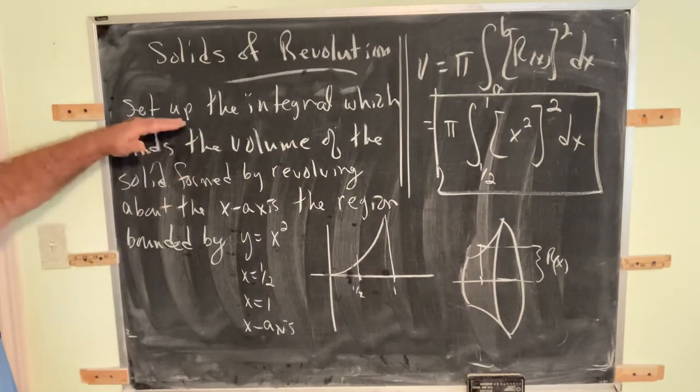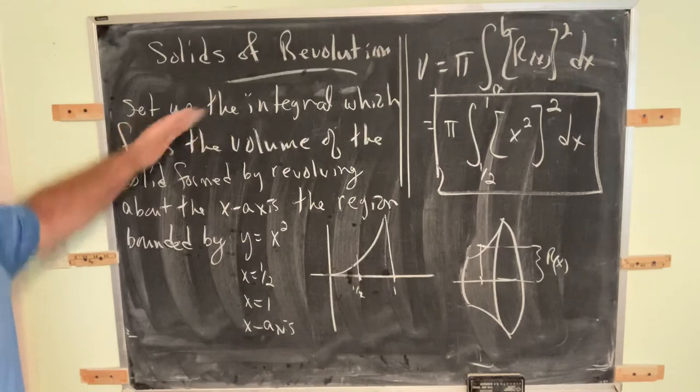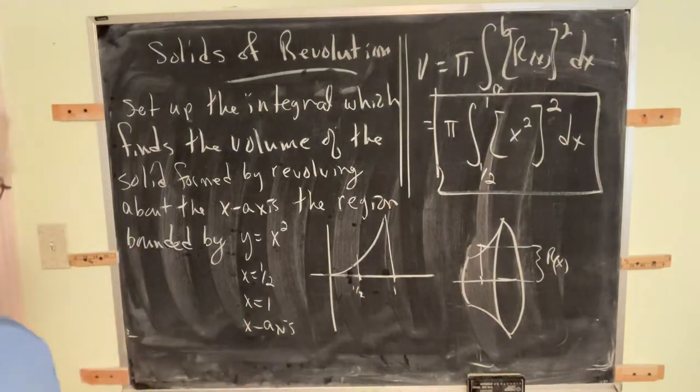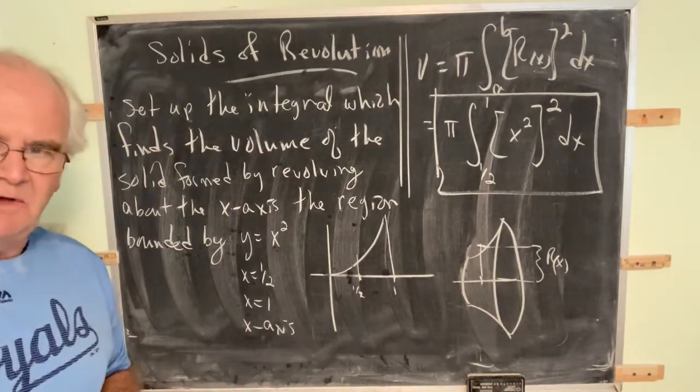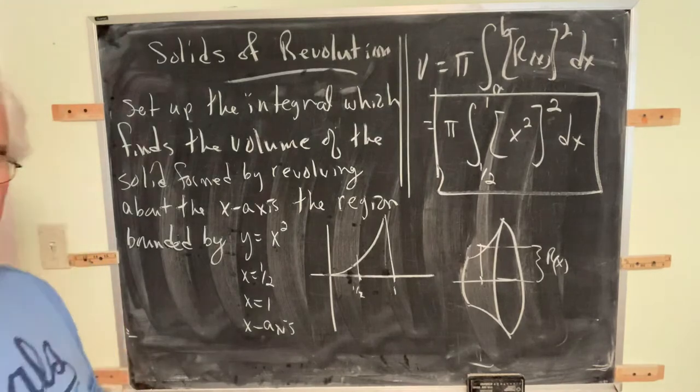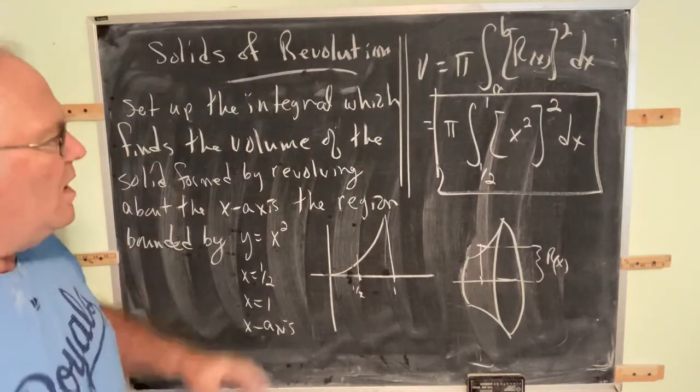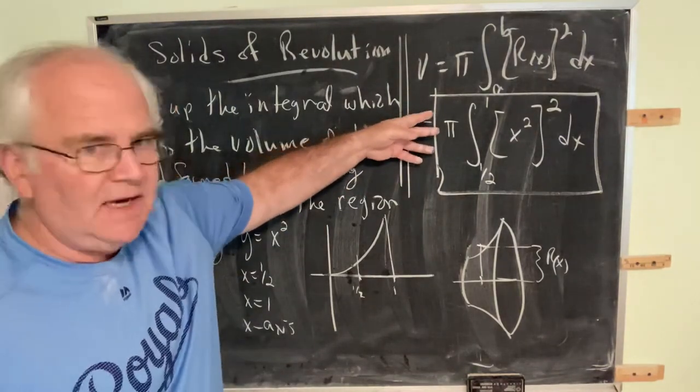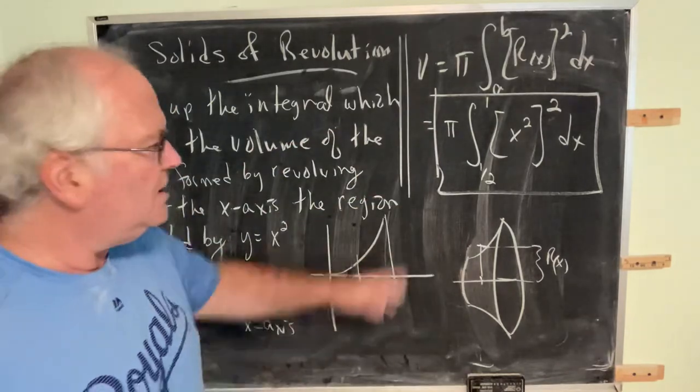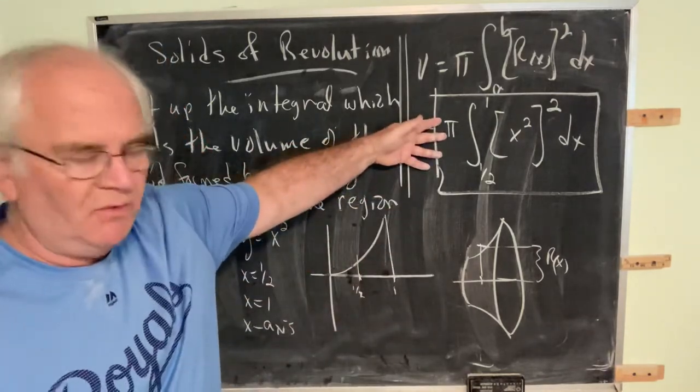All you've been asked to do is set up the integral. In practice, once you become a mid-level engineer at some corporation, once you have the integral set up, you can take this integral, throw it into a machine, and the machine will tell you the number we're looking for.